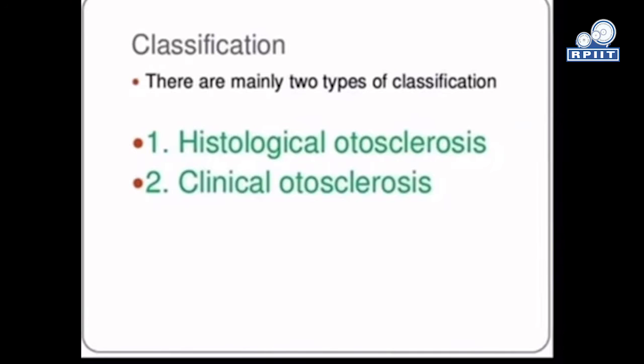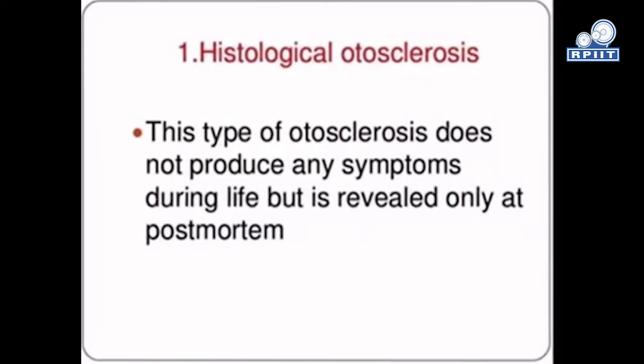Next is classification. There are two types: histological and clinical. Histological otosclerosis does not produce any symptoms during life, such as tinnitus, dizziness, or vertigo, and hearing loss, but is revealed only at post-mortem.